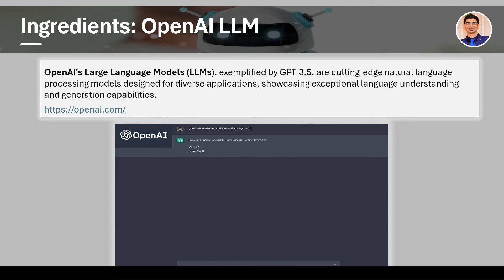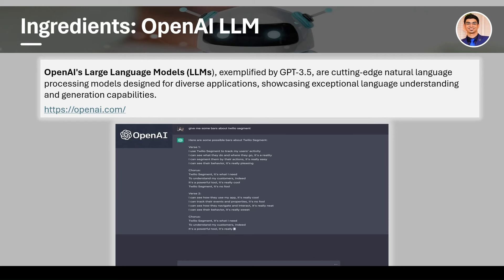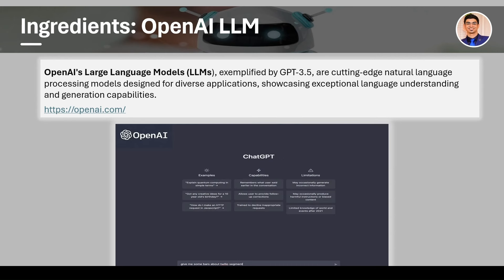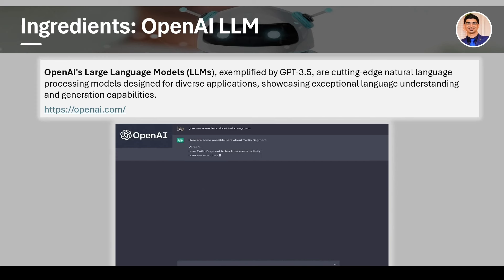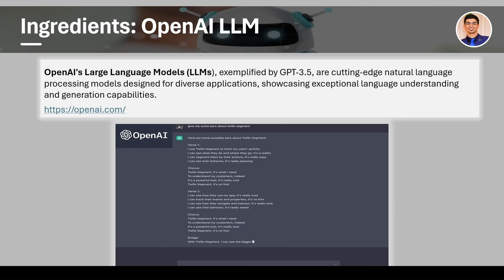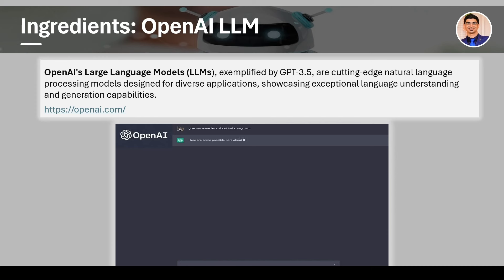Last but not the least, we need large language models — specifically, we are going to use OpenAI's large language model. OpenAI is the organization behind building something like ChatGPT. OpenAI is also working on different types of generative AI models which can be used for various applications. The most promising model from OpenAI is GPT-3.5, which was the initial model for ChatGPT. However, right now there are much more advanced versions such as GPT-4. OpenAI's large language models are cutting-edge natural language processing models designed for various applications, showing exceptional language understanding and generation capabilities. I recommend visiting the links for more details on these components.